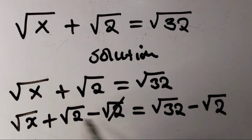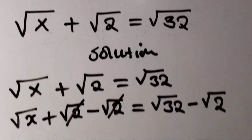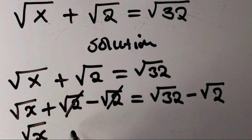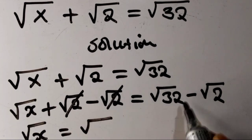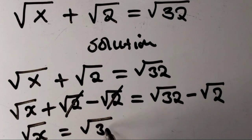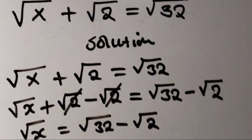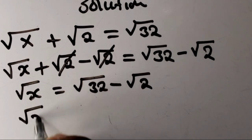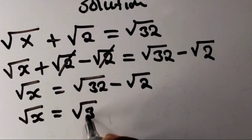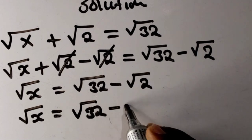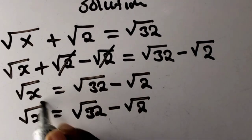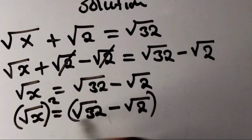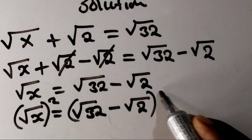The root 2 terms cancel, leaving root x equals root 32 minus root 2. Then we need to square both sides in order to eliminate the square root, because we are looking for x.